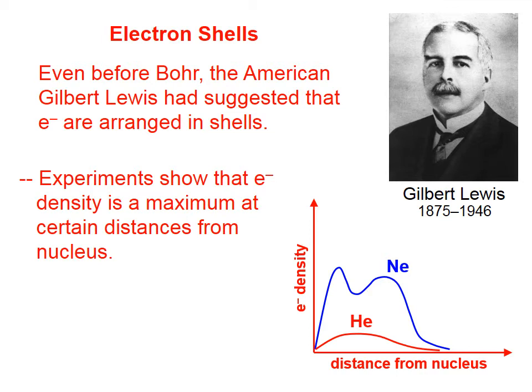Notice that the first peak for neon is only this far from the nucleus, whereas the first peak for helium is this far from the nucleus. What that means is that the 1s orbital in neon is smaller, it's tinier, it's closer to the nucleus than the 1s orbital in helium.